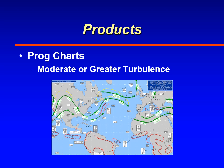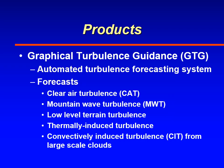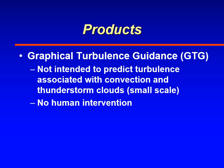Weather prognostic charts produce forecasts of moderate or greater turbulence, and there are prog charts for the low, mid, and high levels. The Graphical Turbulence Guidance Forecast, or GTG, is produced by the Aviation Weather Center. It is an automated turbulence forecasting system that forecasts clear air turbulence, mountain wave turbulence, low-level terrain turbulence, thermally induced turbulence, and convectively induced turbulence from large-scale clouds. GTG is not intended to predict turbulence associated with convection and thunderstorm clouds.